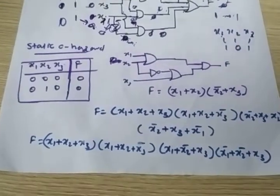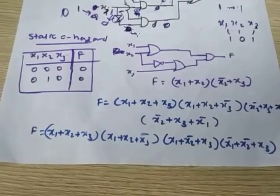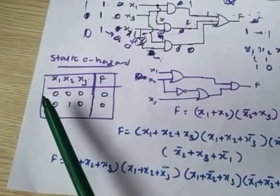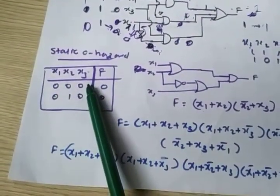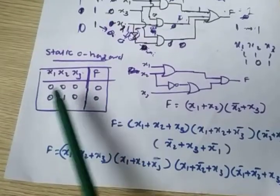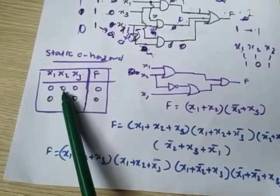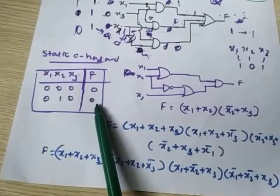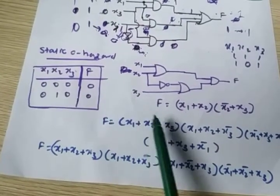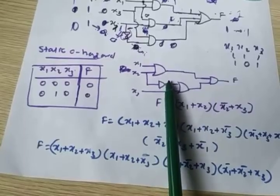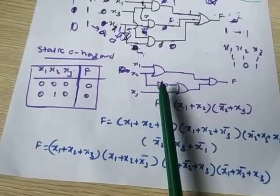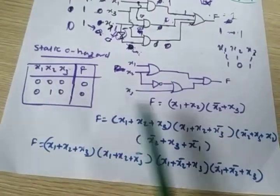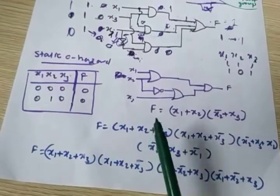Now, static zero hazard elimination. In static zero, we are considering the output is zero. When output is zero and I change a zero input to one, the output should remain zero. But somehow it goes to one, and after the propagation delay at the gate it comes back from one to zero. That one glitch needs to be eliminated.